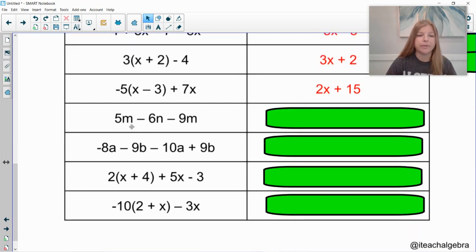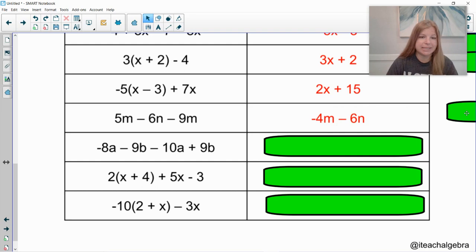Last 4. 5m minus 6n minus 9m. 5m and negative 9m. So 5 minus 9 is negative 4. So this would be negative 4m. And then minus 6n.